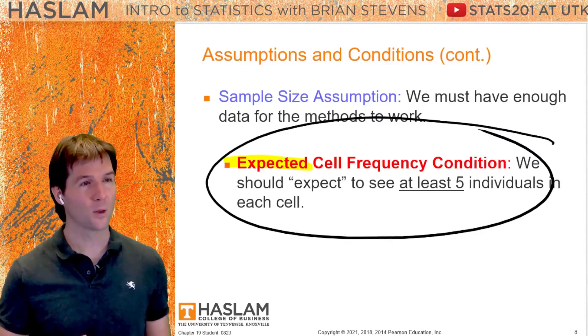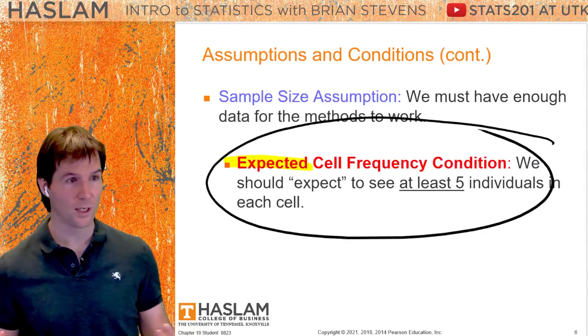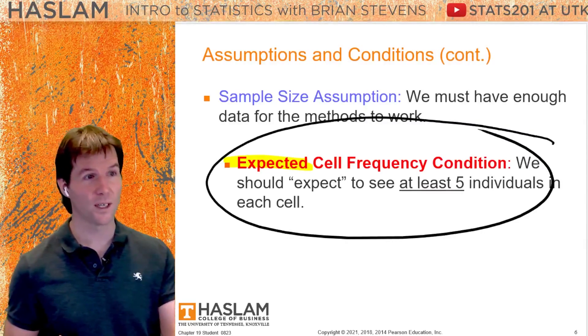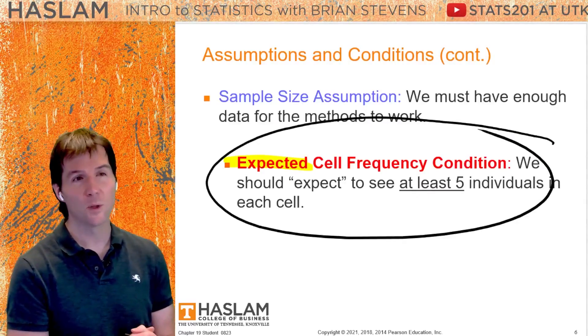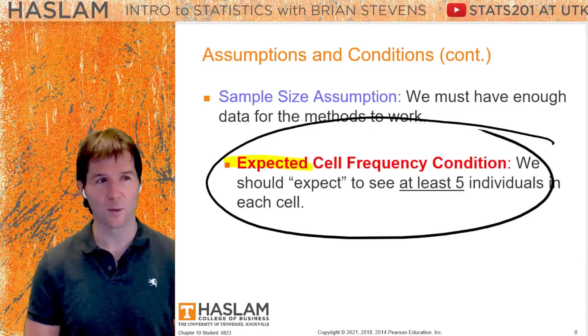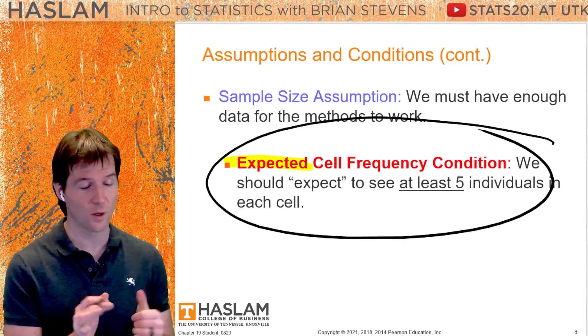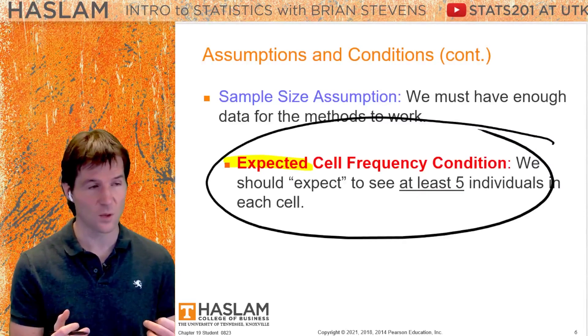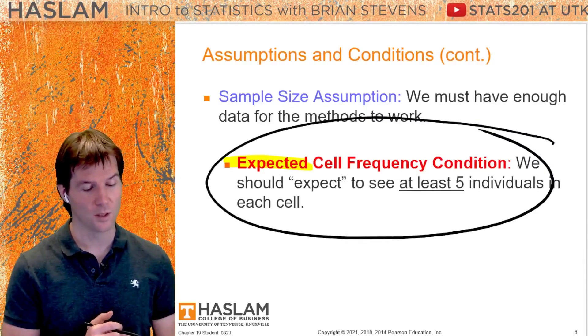It's like if you go out with your friends and you all need to be over 21 — if the youngest friend is 23, you're good. You're all over 21. So we check the smallest expected cell count and see if just the lowest one is greater than five. Because if the smallest one is greater than five, we're all good.